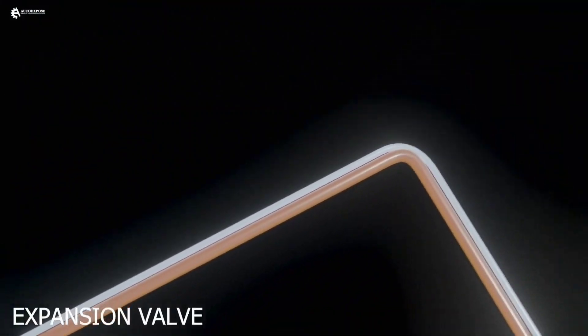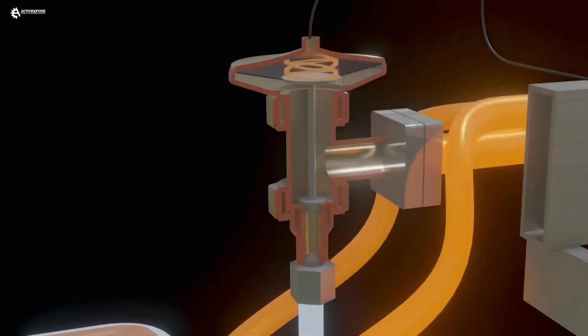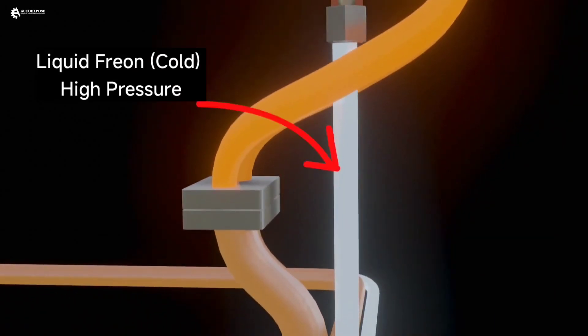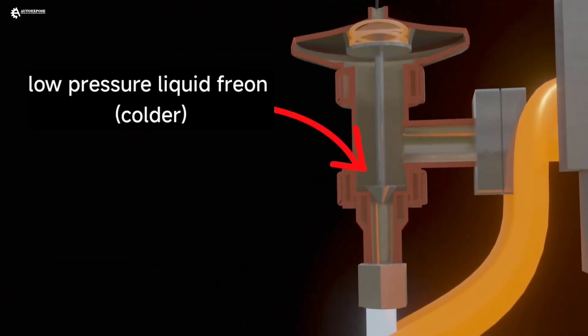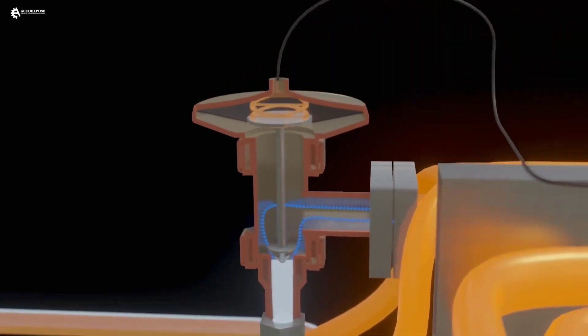From the condenser, this high pressure liquid freon is returned to the indoor unit, to the expansion valve. Here, the pressure of the freon is drastically reduced, causing the temperature of the freon to also drop drastically. After passing through the expansion valve, the freon re-enters the evaporator.